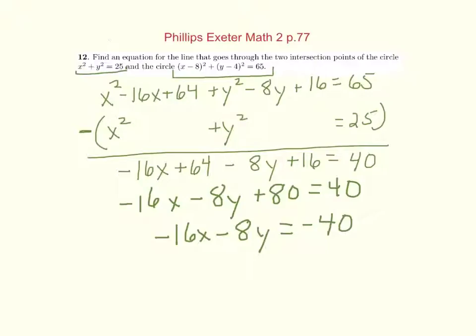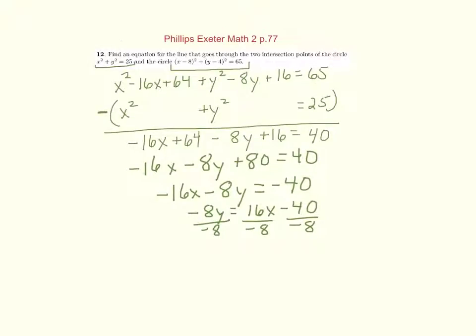If you wanted to set this into y equals form, you could, let's see, add the 16x. And then what would you do? Multiply by negative 1. Divide by negative 8. And you get y equals negative 2x plus 5. And that's the equation of that line that went through those circles.